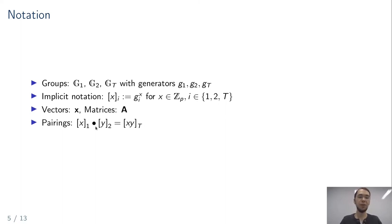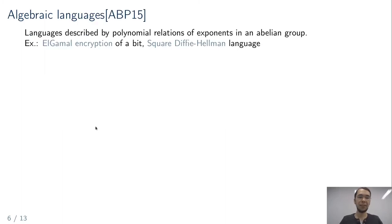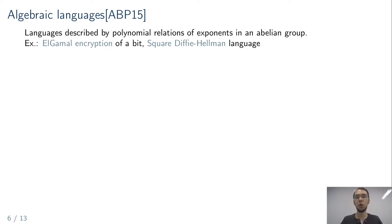Let's define what algebraic languages are. Intuitively, these are languages described by polynomial relationships between exponents in an abelian group. For example, ElGamal encryptions of a bit are an algebraic language, as is the DDH language—whether we have (G, G^x, G^{x²}) or (G, G^x, G^z) for a random z.